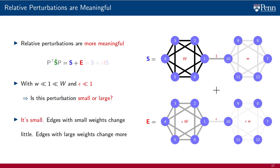Well, it is certainly small. Edges with small weights change a little. Edges with large weights change more. The character of the graph does not change drastically. It is still a graph with a strong community on the left and a weak community on the right, connected by a link of intermediate strength.